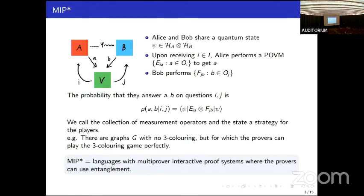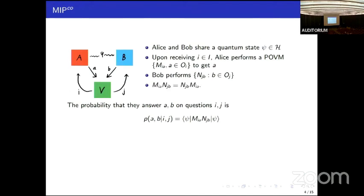We call the collection of measurement operators and the state a strategy for the players. An example of how this gives the players more power than merely classical resources is that there are graphs with no three coloring and therefore no perfect three coloring game strategy, but for which the provers can play the three coloring game perfectly if they share some entanglement. We denote by MIP star the class of languages with multi-prover interactive proof systems where the provers can use this type of tensor product entanglement.